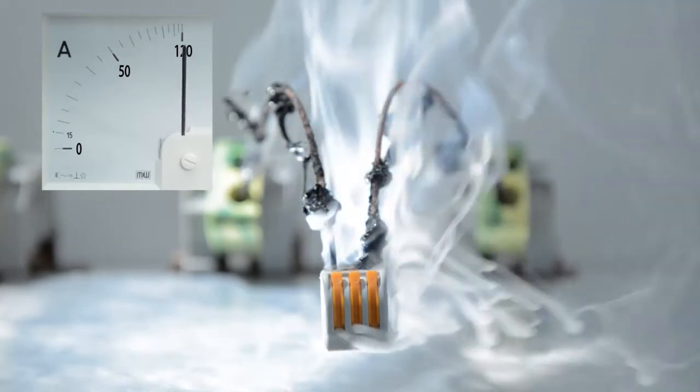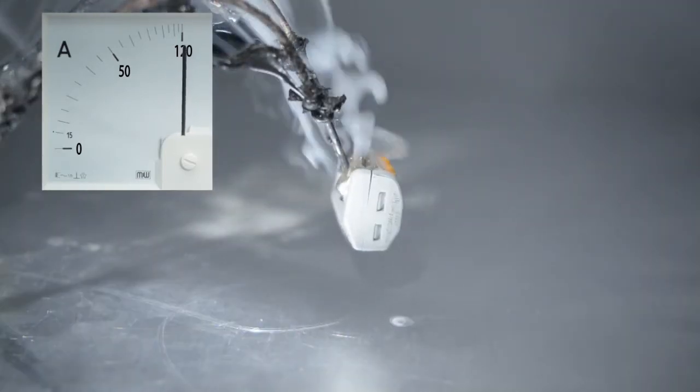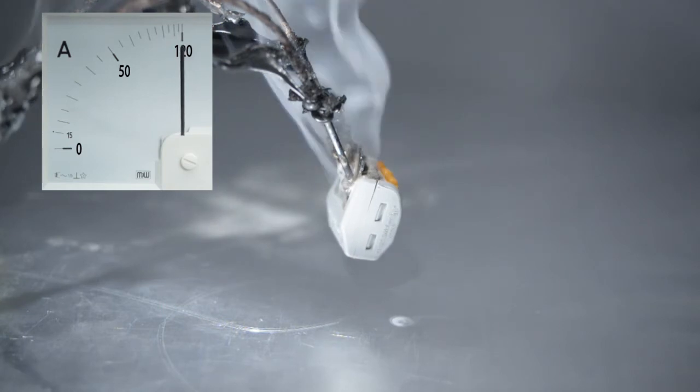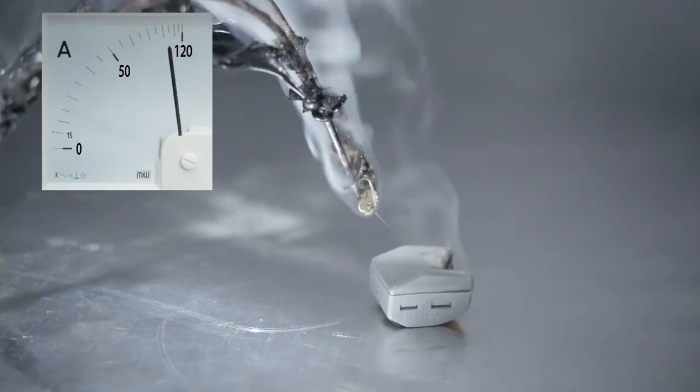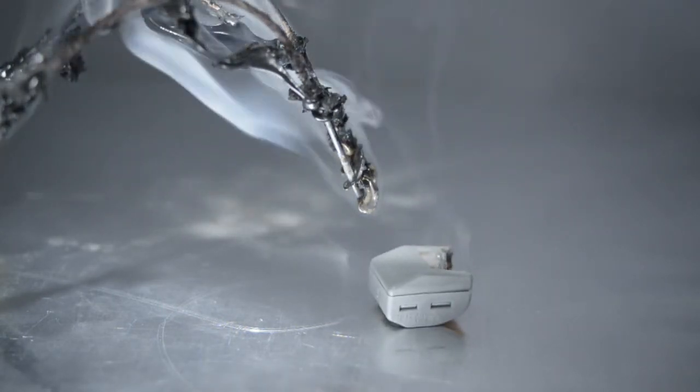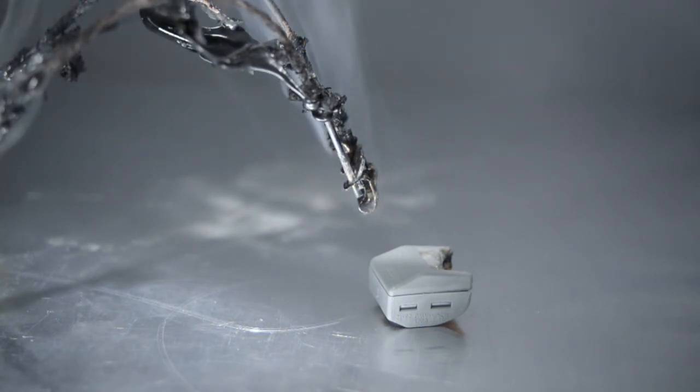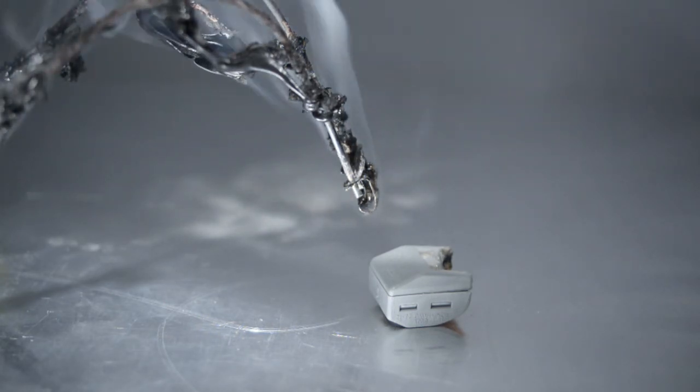The connector housing will only melt after a prolonged overload and will eventually drop off the contact. The contact is still intact and the wires remain securely connected. Even after such an extreme test, the contact points continue to meet the normative requirements in terms of contact quality.